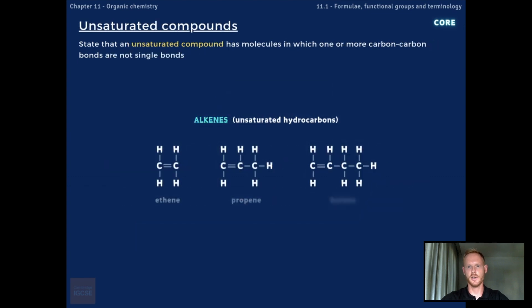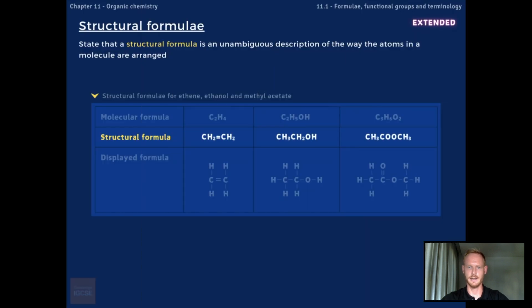In contrast, molecules in which one or more carbon-carbon bonds are not single bonds, like alkenes, are referred to as unsaturated compounds. The presence of a double carbon bond means that carbon atoms in these compounds are not bonded to the maximum number of atoms and therefore have the potential to make further bonds. Okay, that's everything you need to know for core, so we'll move on now to the extended section.